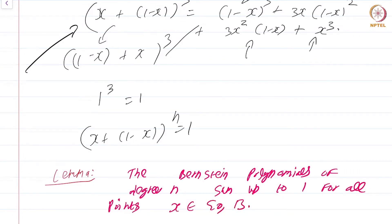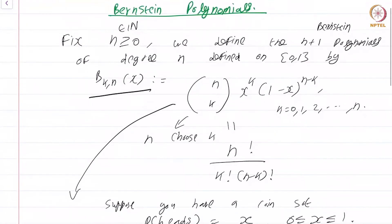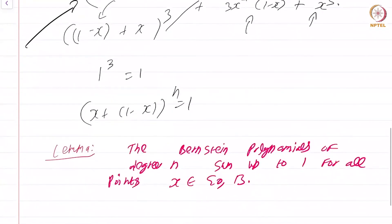Going back to the probabilistic interpretation: b_{k,n}(x) is the probability of getting k heads in n tosses of a biased coin with P(heads) = x. This result is obvious because when you toss a coin n times, you get 0, 1, 2, or up to n heads — one of them is guaranteed to happen. So the sum of all these probabilities must equal 1. This gives another way to prove the lemma.